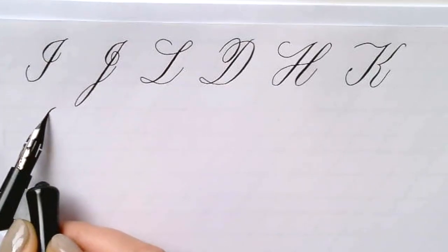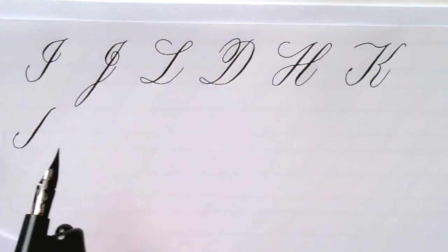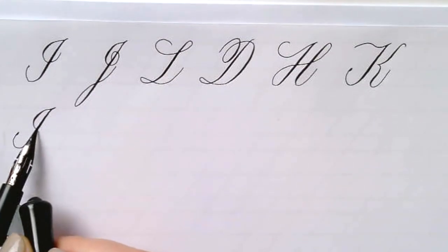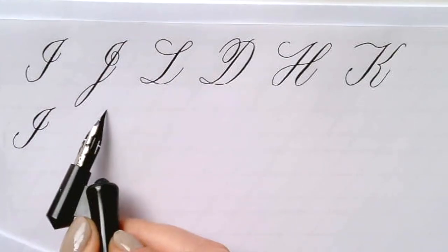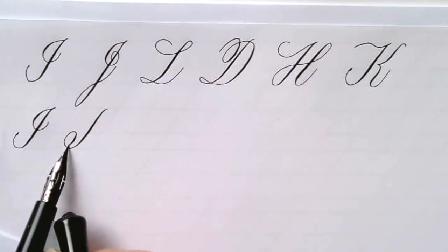For this next group I'm going to remind you again: upstrokes are thin, downstrokes are thick. This is the I, a dynamic stem, and then from the ascender line we come out in a little oval form that we're not closing.